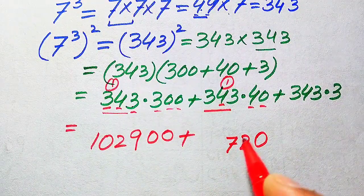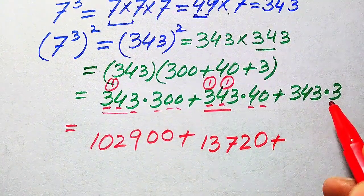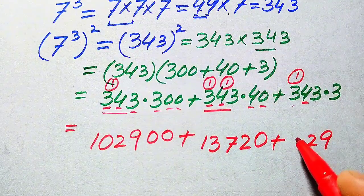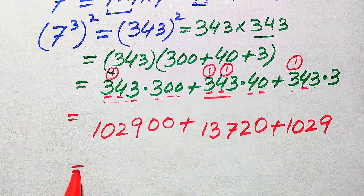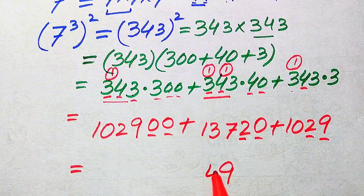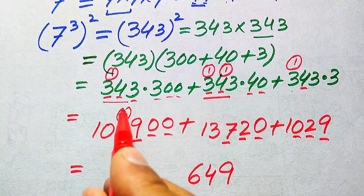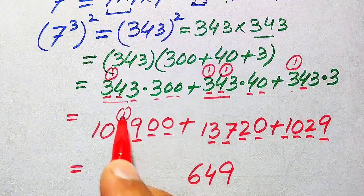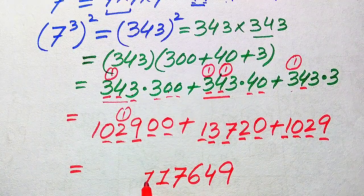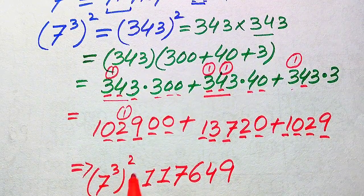Continuing: 4 fours are 16, 16 plus 1 is 17 — write 7 and carry 1; 4 threes are 12, 12 plus 1 becomes 13. Then multiplying 3 with this number: 3 threes are 9; 3 fours are 12 — write 2 and carry 1; 3 threes are 9, 9 plus 1 becomes 10. Summing all partial products: 0 plus 0 plus 9 is 9; 0 plus 2 is 2; 2 plus 2 is 4; 9 plus 7 is 16 — write 6 carry 1; 2 plus 3 plus 1 is 6 plus 1 is 7; finally 1. So 7 cubed whole squared equals 117,649.